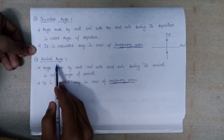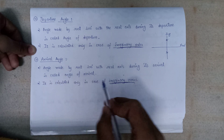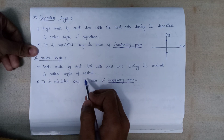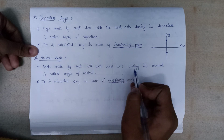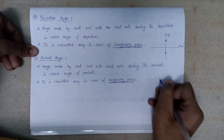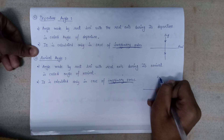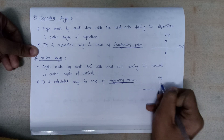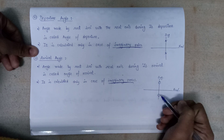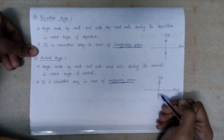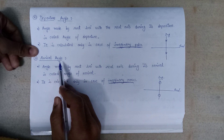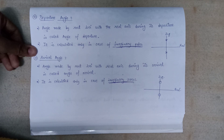The arrival angle is the angle made by the root locus with the real axis during its arrival. The arrival angle is always calculated in the case of imaginary zeros — that is, zeros lying on the imaginary axis of the S-plane. Only when imaginary zeros exist is the arrival angle calculated.